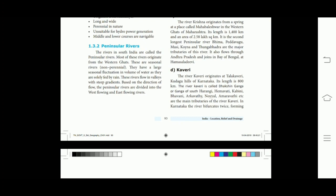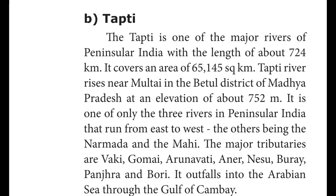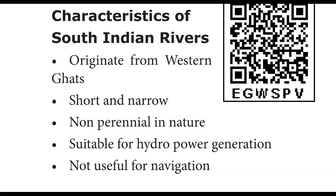The Narmada and the Tapi are the only long rivers which flow west toward their estuaries. The river Narmada rises in the Amarkantak hills. The Tapi river rises in Madhya Pradesh. Characteristics of South Indian rivers: originated from the Western Ghats, short and narrow, non-perennial in nature, suitable for hydropower generation, and not useful for navigation.